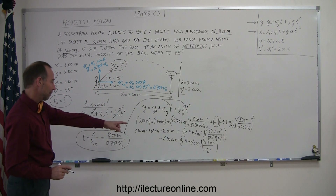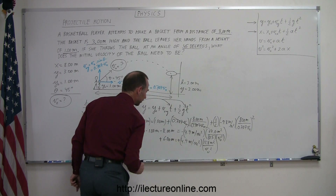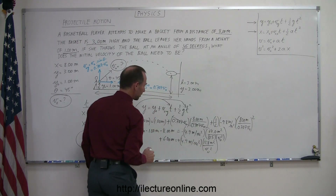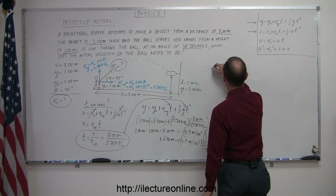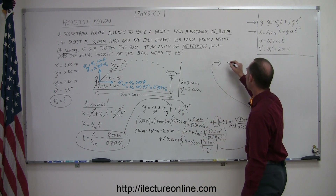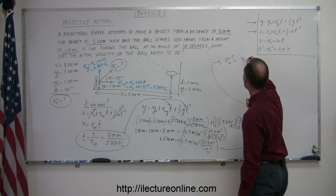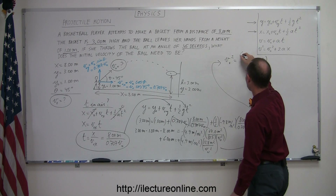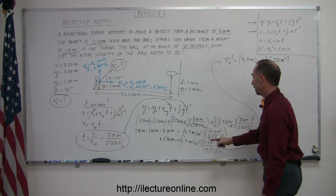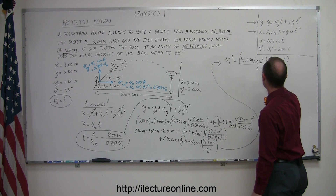Now I have a negative on both sides, so I can multiply both sides by negative one to make both sides positive. Moving v initial squared to one side and dividing both sides by 6 meters: v initial squared is equal to 4.9 meters per second squared times 128 meters squared, divided by 6.00 meters. This meter cancels with one meter, leaving meters squared per second squared, and v initial squared is on the other side — so I can take the square root of both sides.